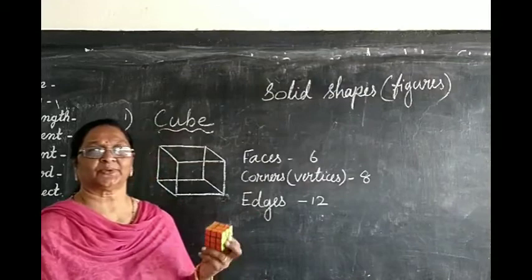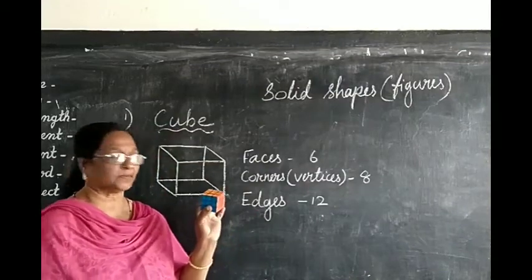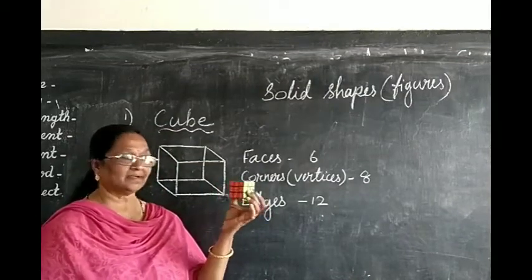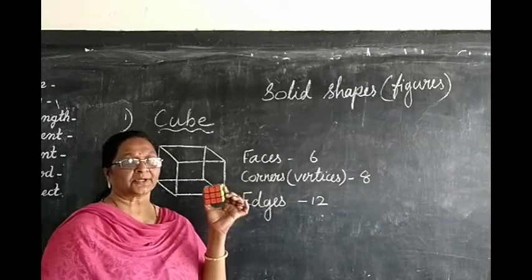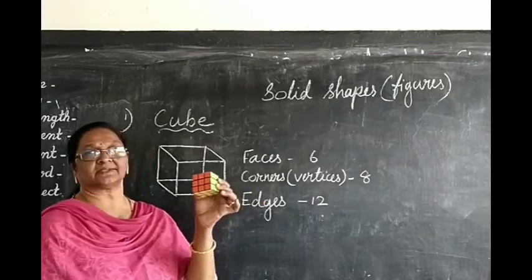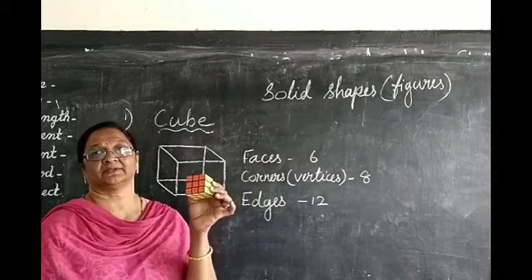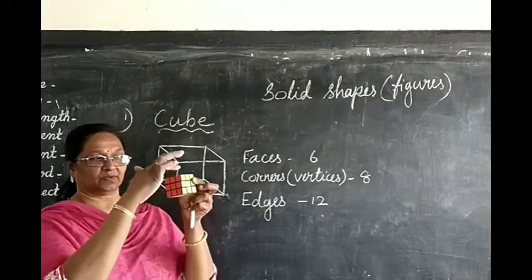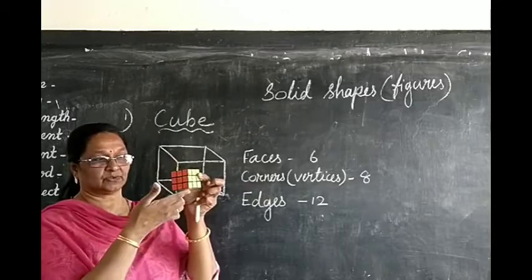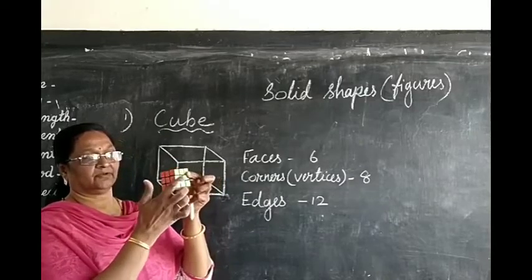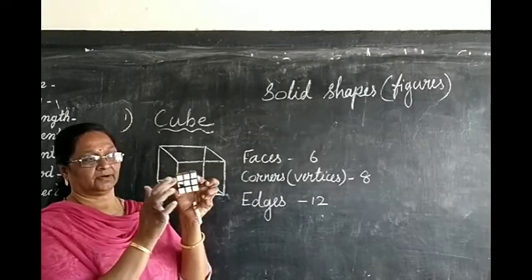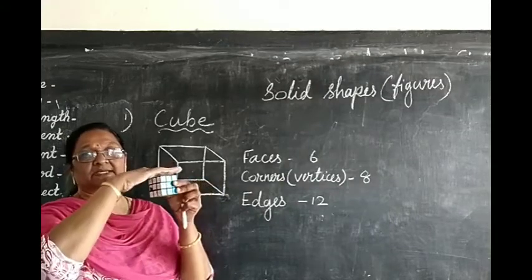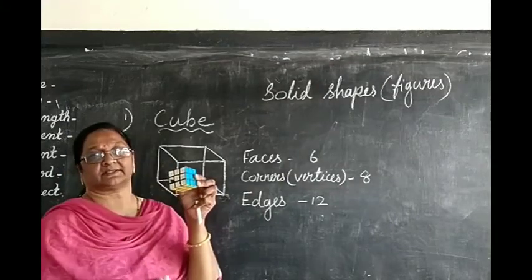The first one we are going to learn about is a cube. It is a cube. Now tell me, how many faces is it having? Six faces. One, two, three, four, five, six. So six plain faces it is having.